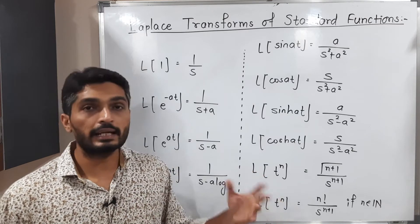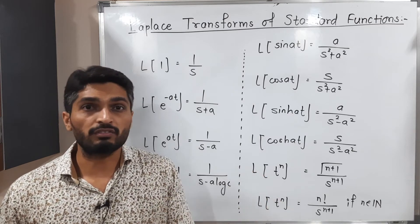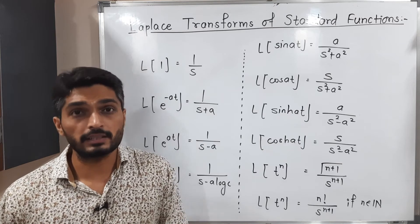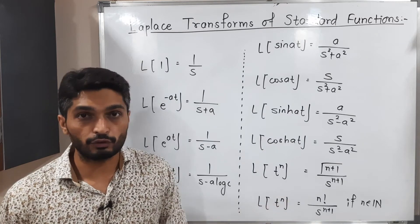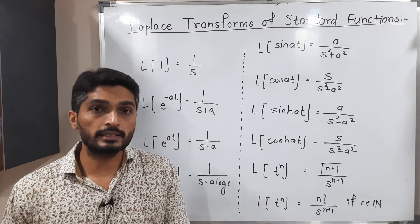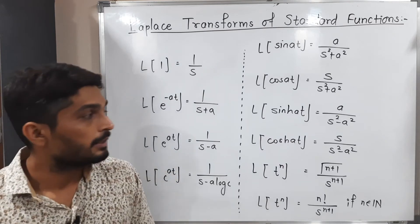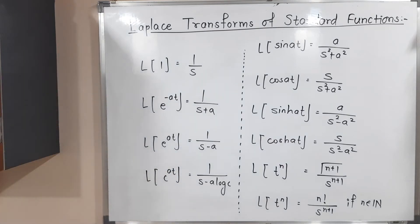So you have to go for n!/s^(n+1). But if n is other than natural number like 3/2, some fractions are there, some negative numbers are there, then you should go for the second Laplace formula. Second Laplace formula, let us discuss two more formulas before that, I suggest you to make a screenshot of it.